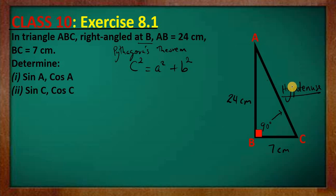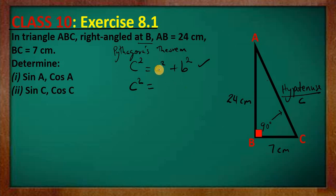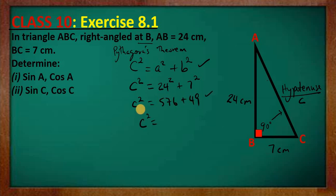Here, C is representing the length of the hypotenuse. A and B are the lengths of the other two sides. Because addition is commutative, it doesn't matter the order. So let A equal 24 and B equal 7. We have C squared equal to 576 plus 49, which gives 625. To find C, we square root both sides: C equals 25.